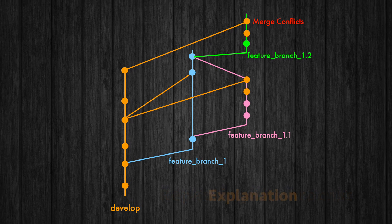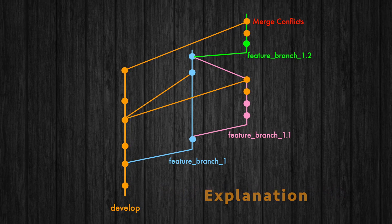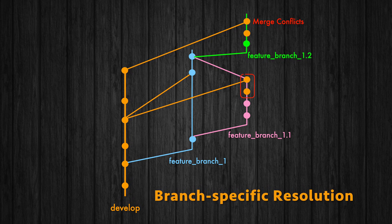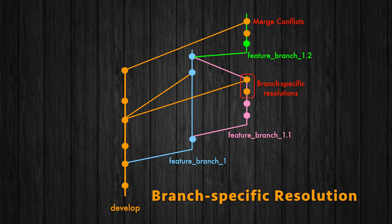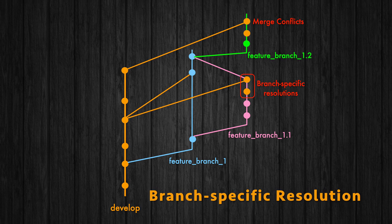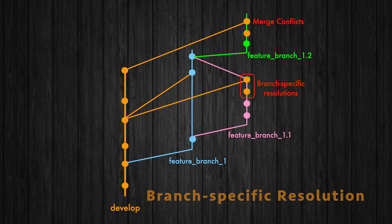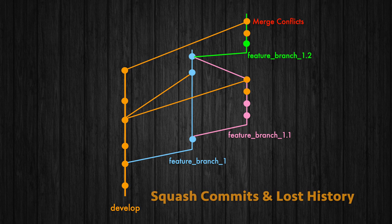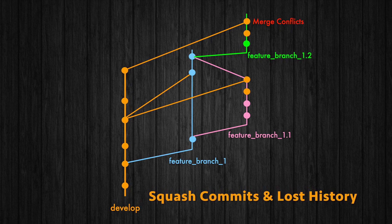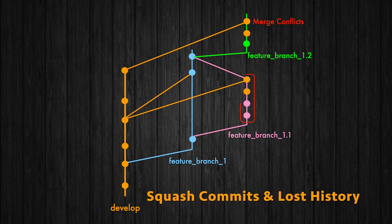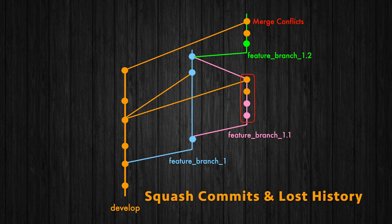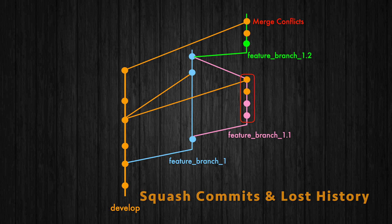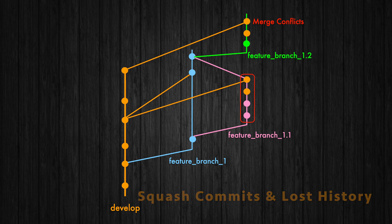Why does this happen? Here is the explanation. Branch-specific resolutions: when you resolved conflicts in FeatureBranch101, those resolutions are specific to that branch — they don't automatically carry over to other branches. Squash commits and lost history: when you squash-merge FeatureBranch1, the detailed commit history from develop isn't retained. The squash commit only records the final state after the merge, not the individual commits and their conflict resolutions.